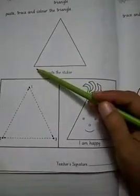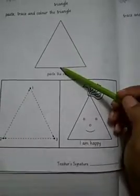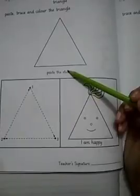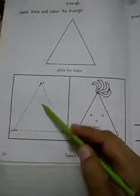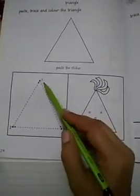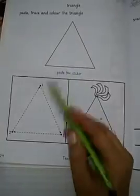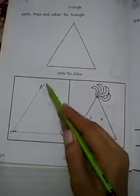3 corners. 1, 2, 3 lines. You will paste. You will paste the sticker. Then you will trace. You will trace the sticker and join the dots.